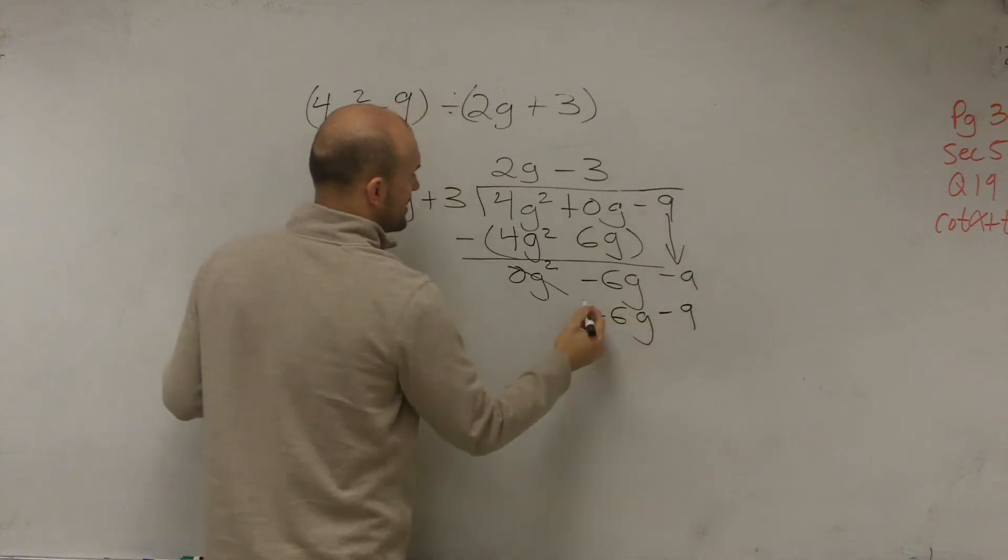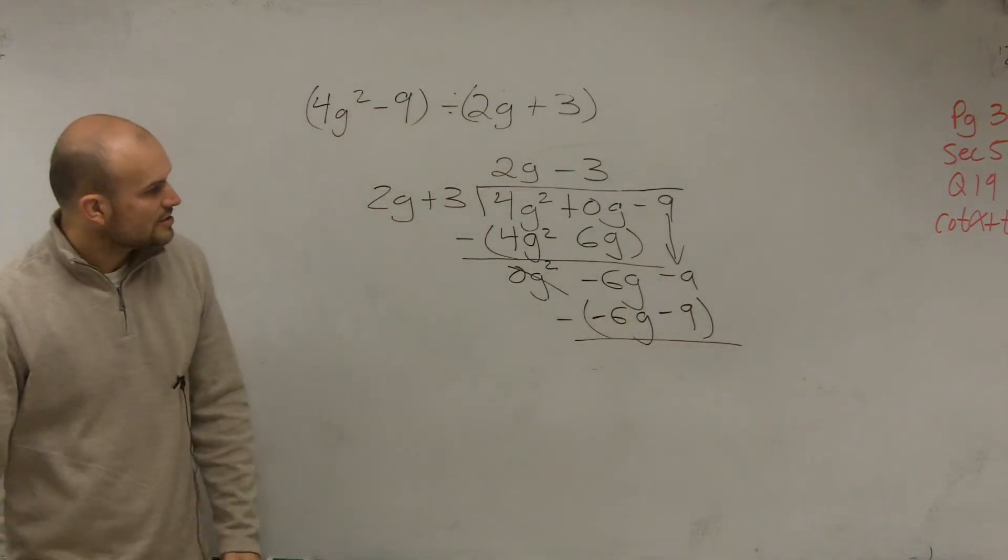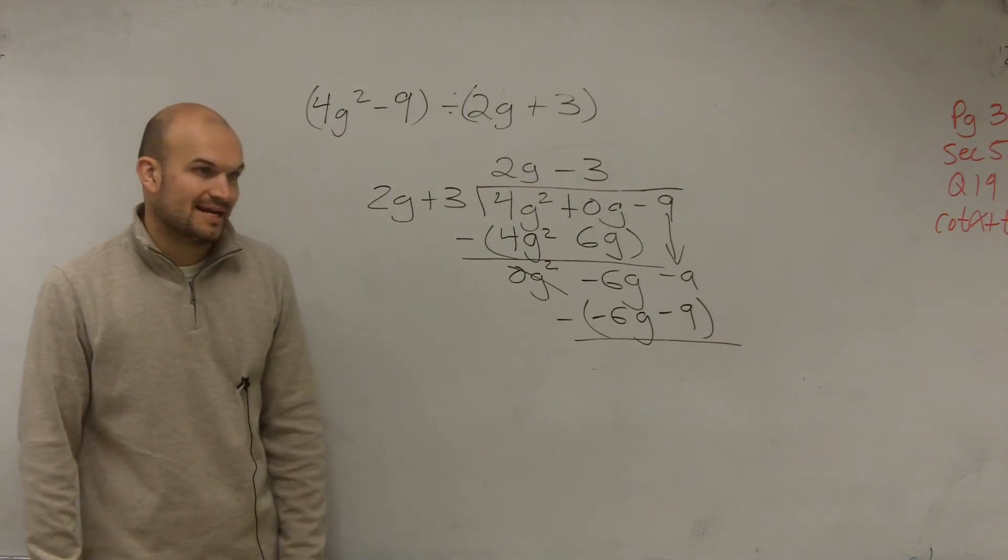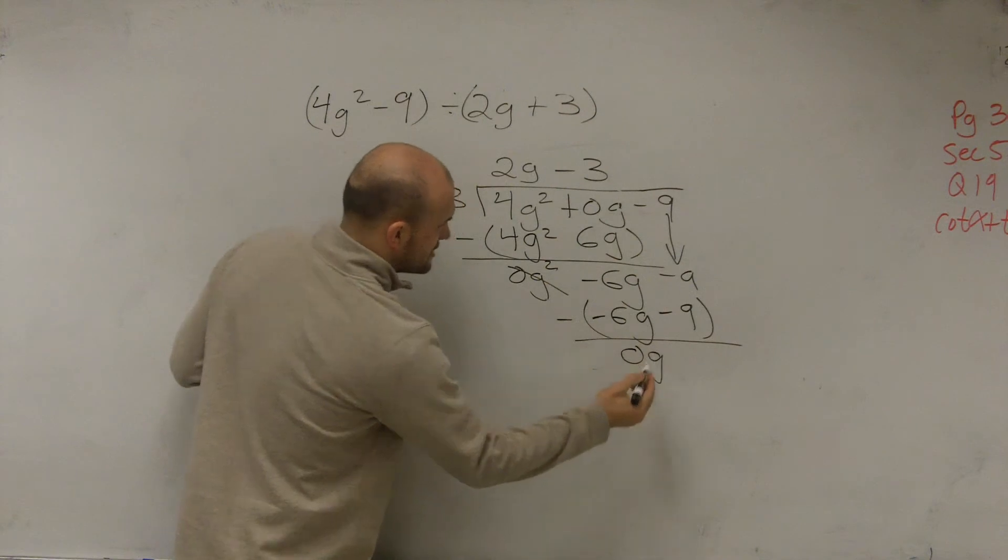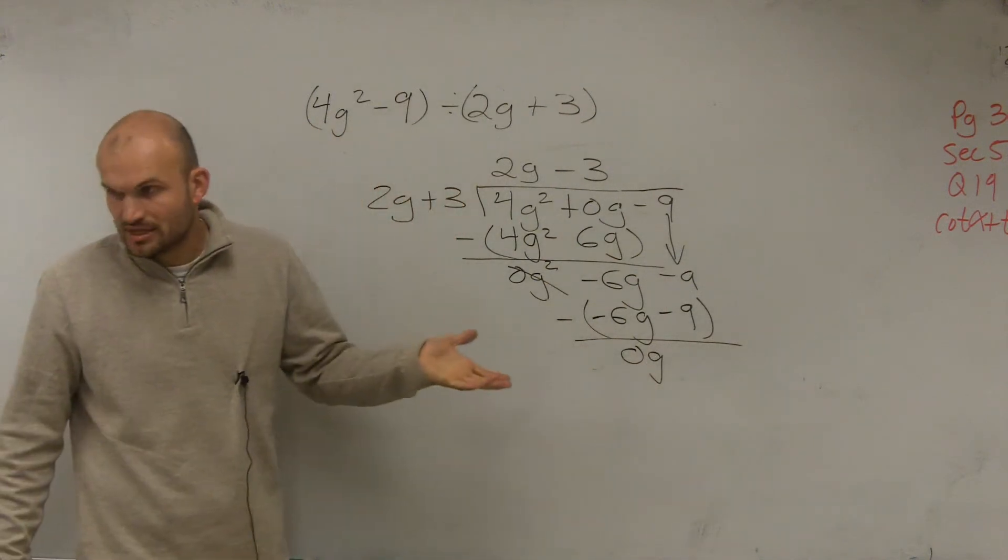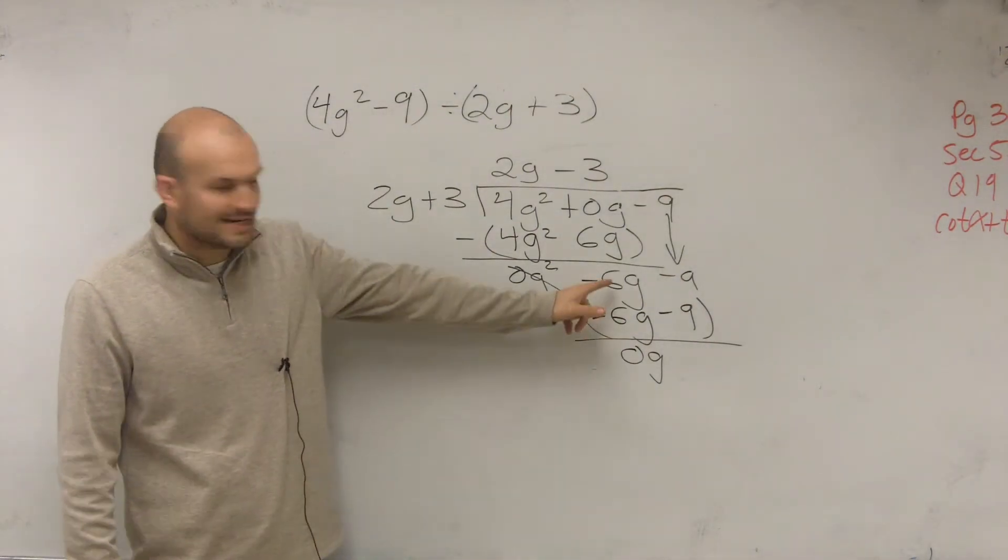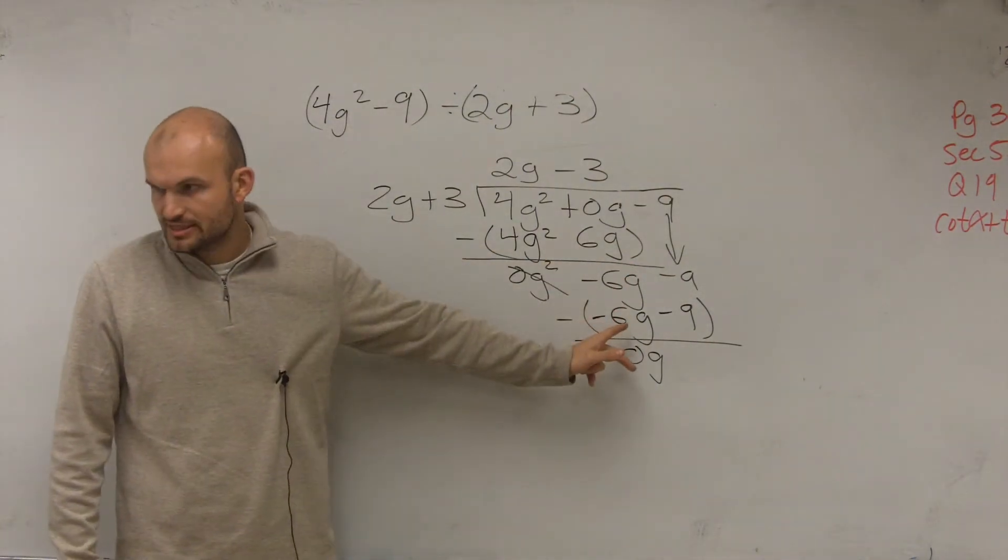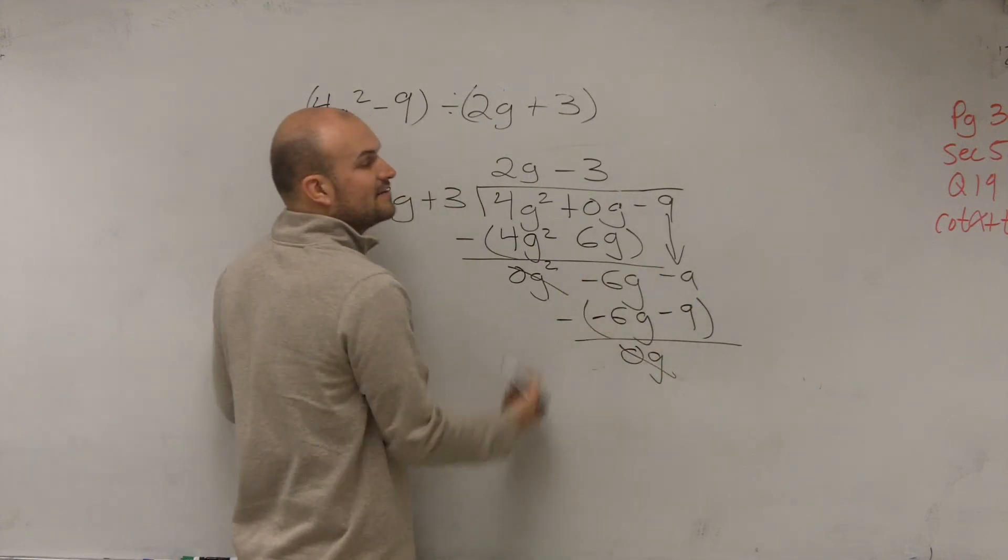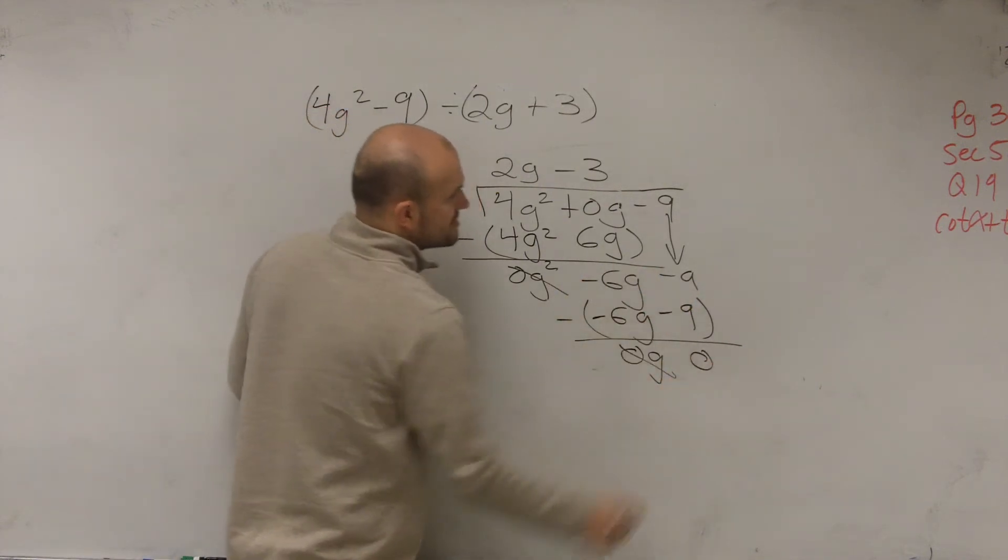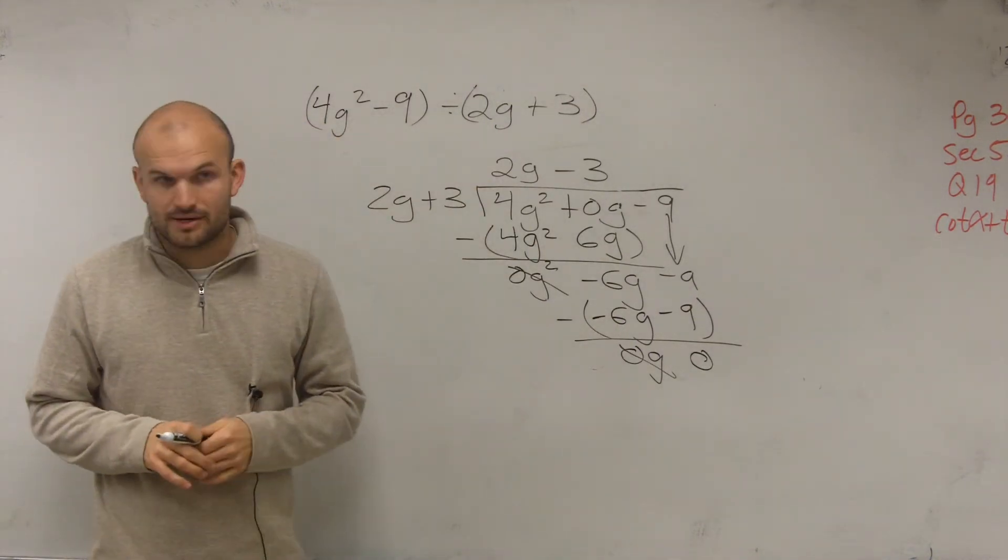Bring down this negative 9 to subtract, put it in parentheses, and subtract. So negative 6g minus a negative 6g, that becomes a double negative, which is 0g. So it's negative 6g plus 6g, which is 0g. And then a negative 9 minus a negative 9 again becomes 0. So therefore, your remainder is 0, and your final answer is 2g minus 3.